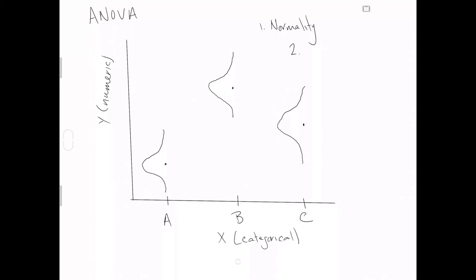The next assumption states that the variation within each level is the same. So whatever the standard deviation sigma is for level A, that same variation exists for all of the levels. We call this 'same variation,' but what we really mean is that it's the same variation for each of the different levels of the categorical explanatory variable x with respect to the numerical variable y.